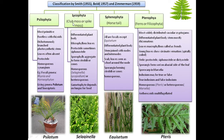Lycophyta — common members are club moss or spike moss. It has a differentiated plant body with microphyllous leaves. The stele is sometimes protostele or siphonostele. Sporophylls aggregate to form strobili or cones, and both homosporous and heterosporous species are present. Sphenophyta — the common member is horsetail (Equisetum). All are fossils except Equisetum. The plant body is differentiated with stems jointed with nodes and internodes.